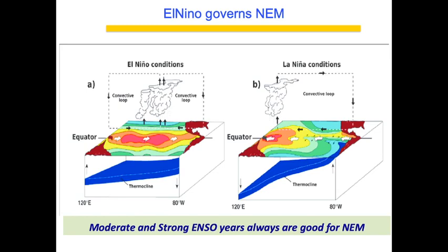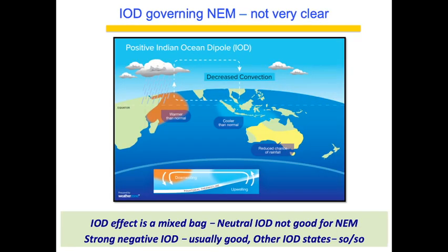Regarding how El Niño governs Northeast monsoon: moderate and strong El Niño years are always good for NEM. During moderate and strong El Niño, Southwest monsoon performance is poor, there is less rainfall, not much cooling of the Bay of Bengal, not much upwelling, so the Bay remains at an elevated SST state — able to produce many systems. La Niña is not conducive because during La Niña there is a lot of rain and freshwater flux, the Bay of Bengal becomes cooler and less convectively active.